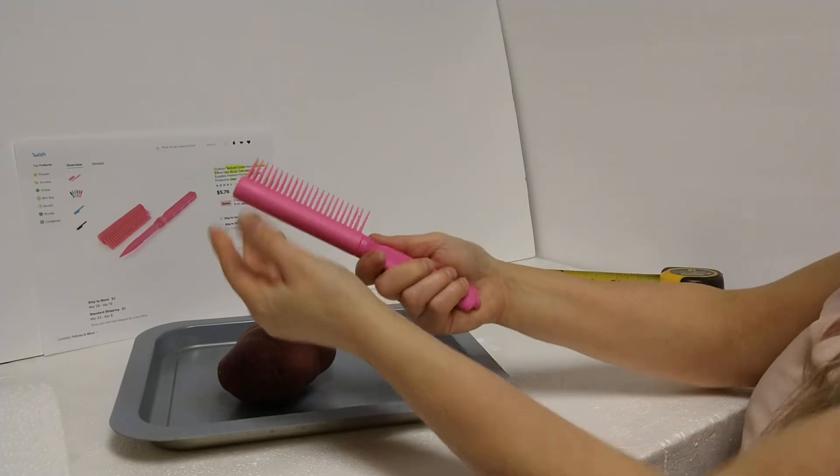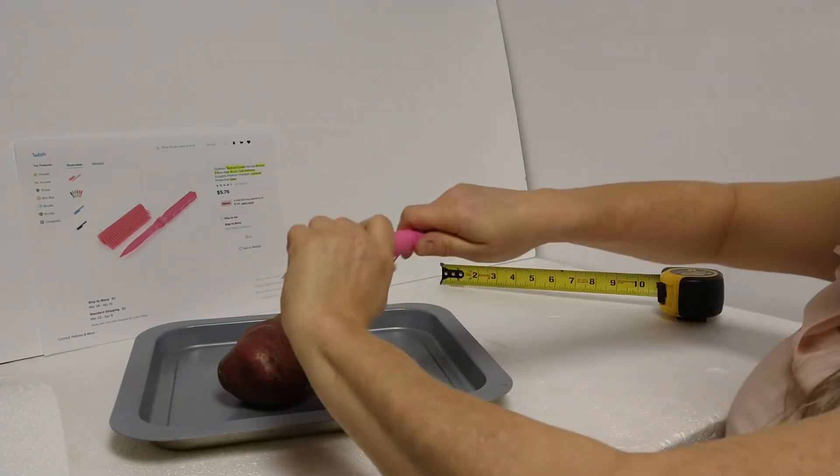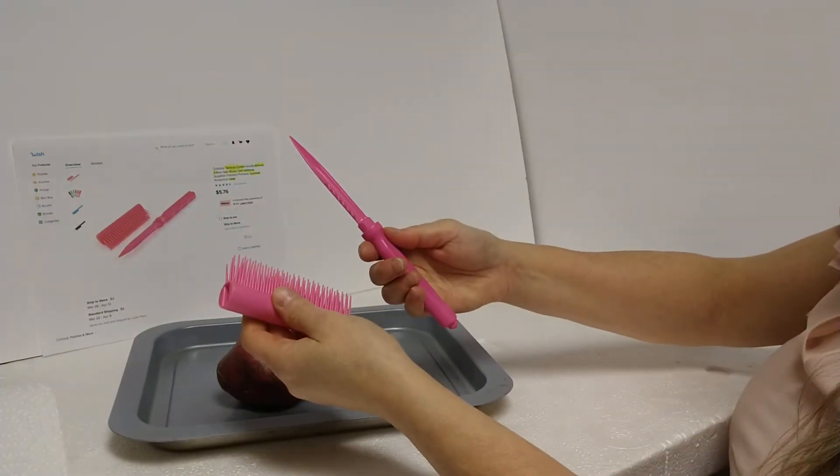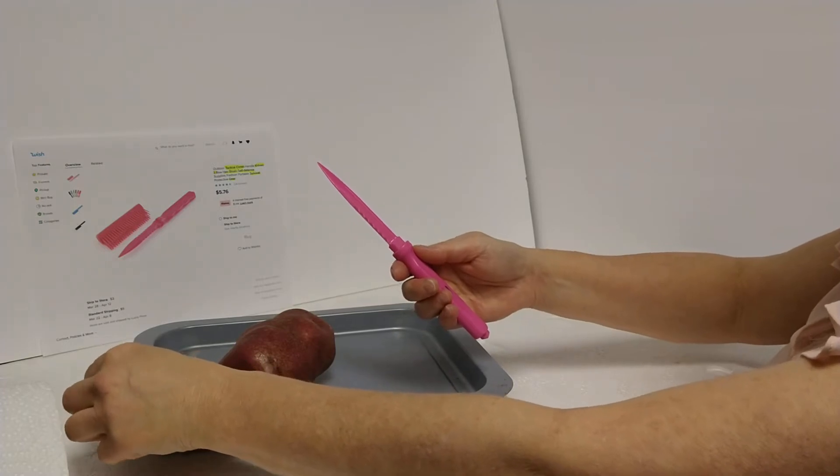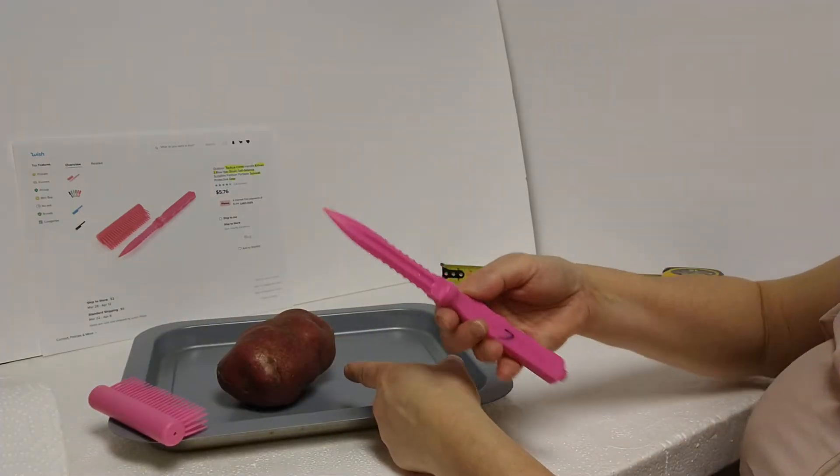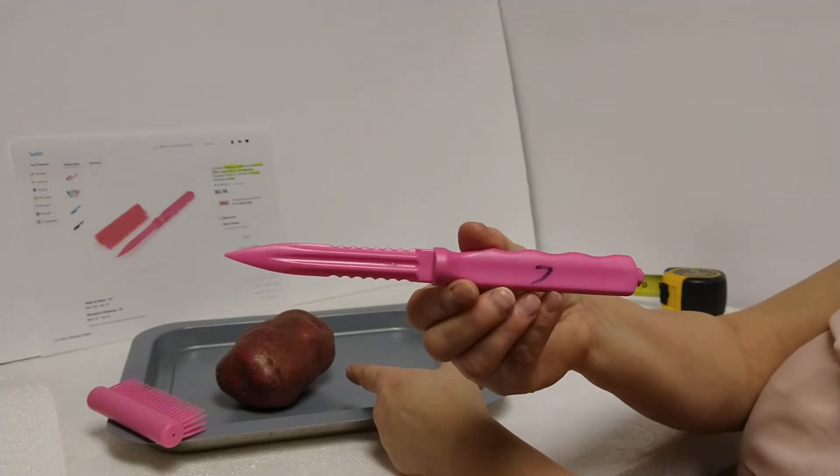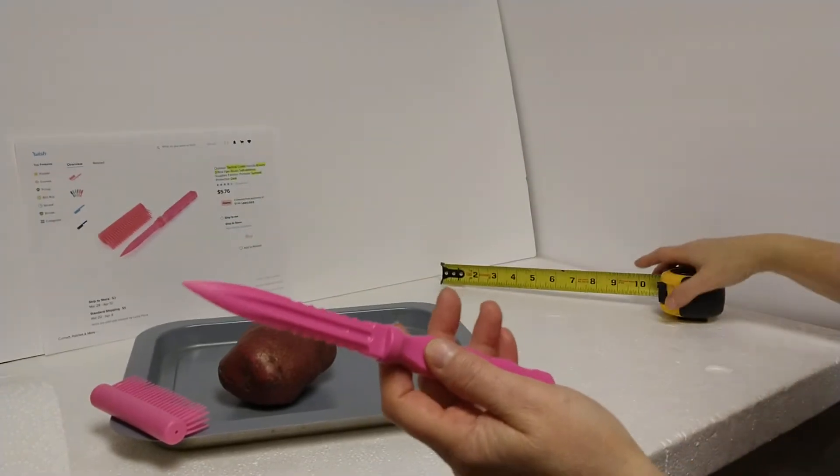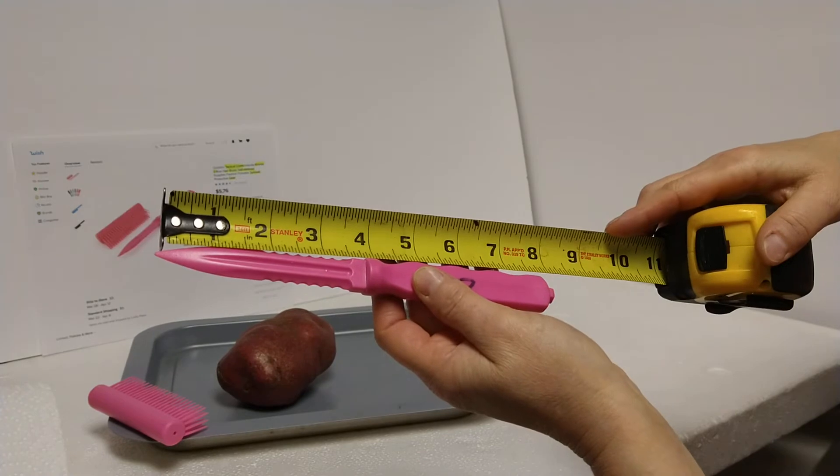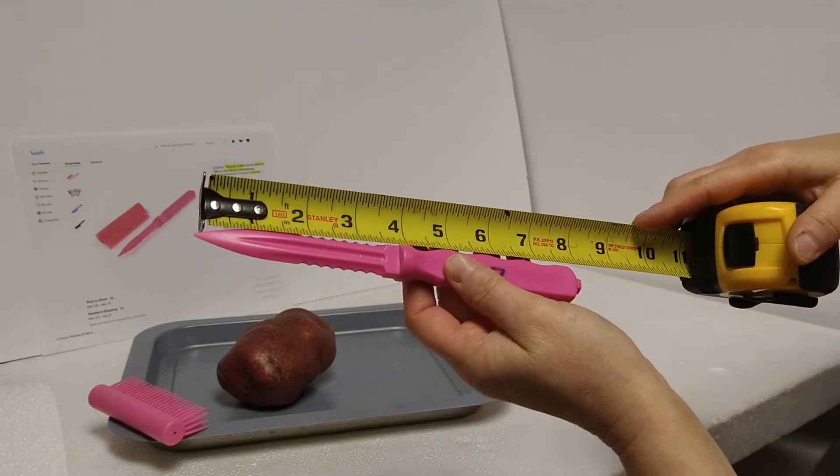So let's check out the protective gear knife end of it. Comes out nicely. Don't mind Mr. Potato Head. He's going to be the sacrificial lamb for testing this knife.